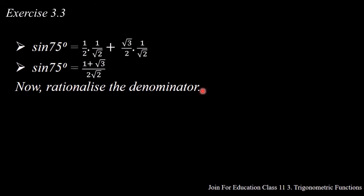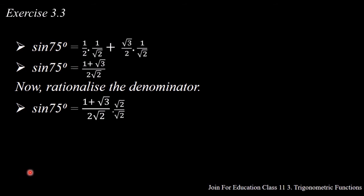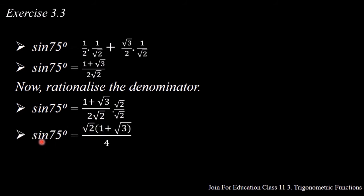Now we rationalize the denominator. We multiply the numerator and denominator by √2. So sin 75 degrees equals (1 + √3)/(2√2) into (√2/√2). We know that √2 × √2 equals 2, so 2√2 × √2 equals 2 × 2 equals 4. Therefore, sin 75 degrees equals √2(1 + √3)/4.